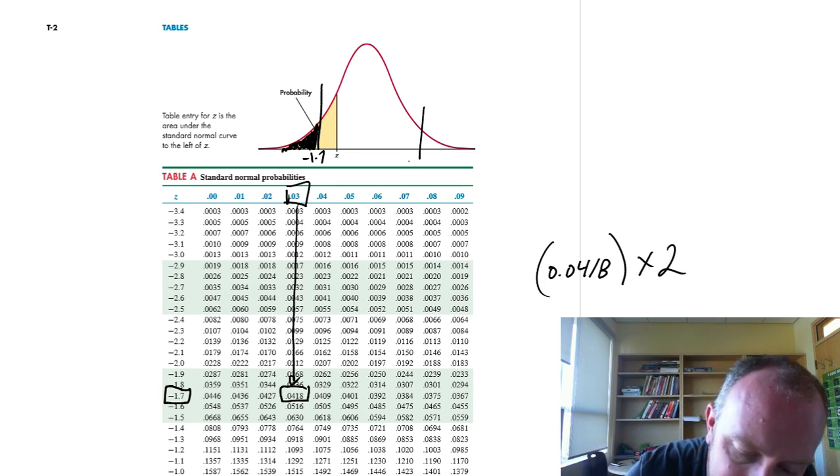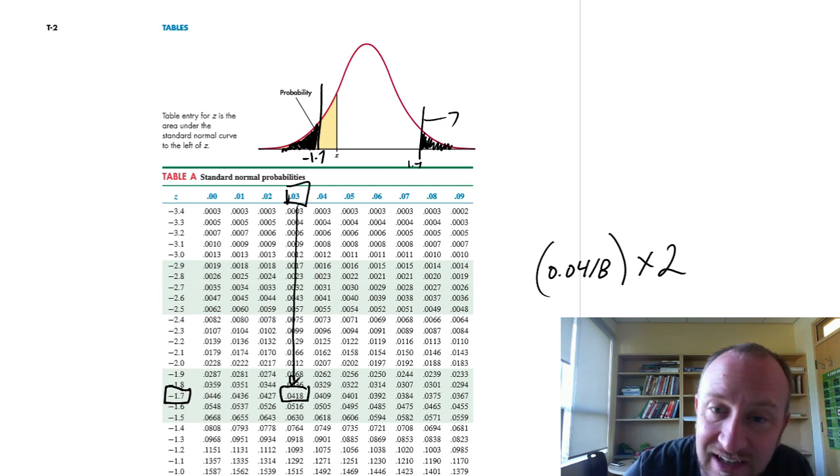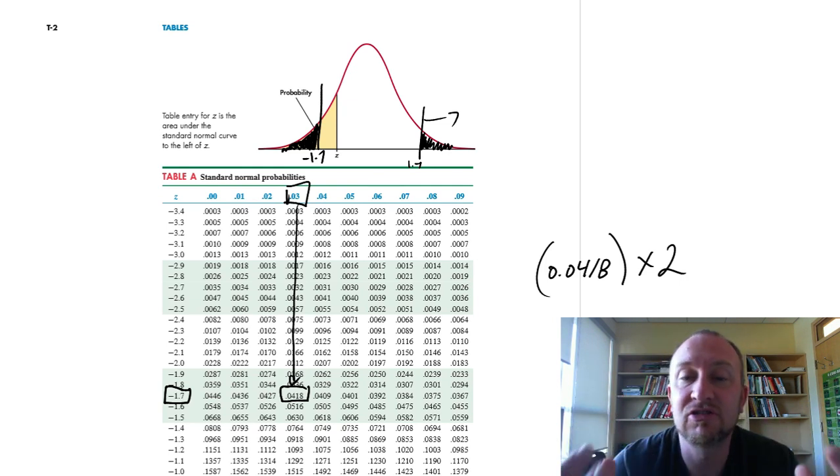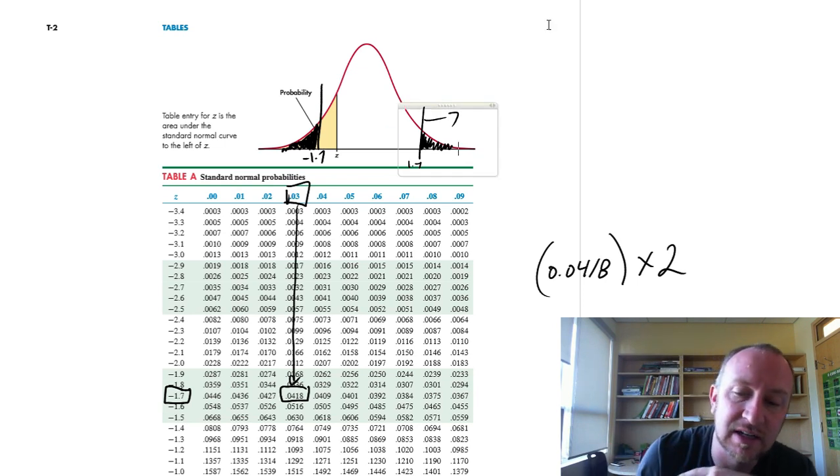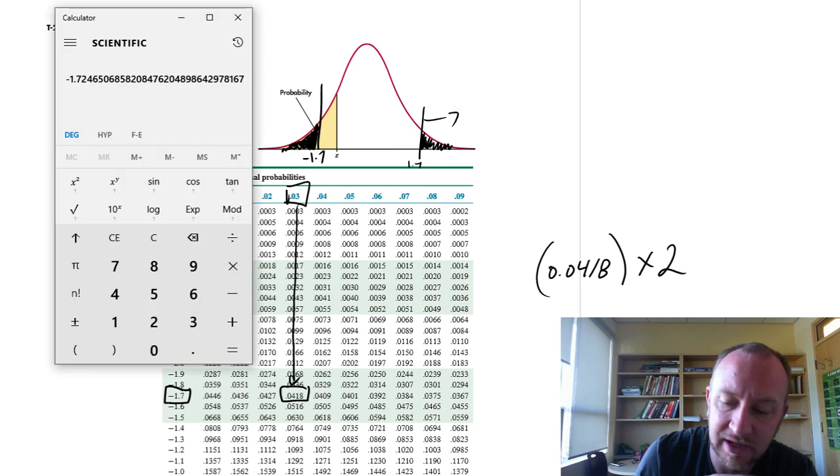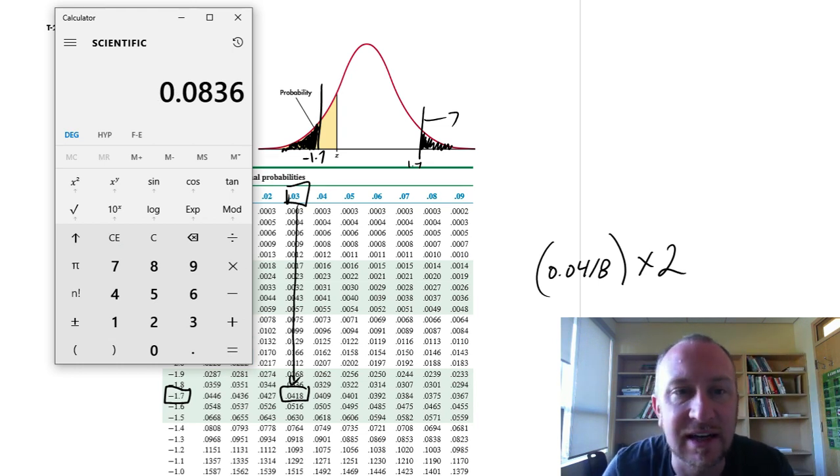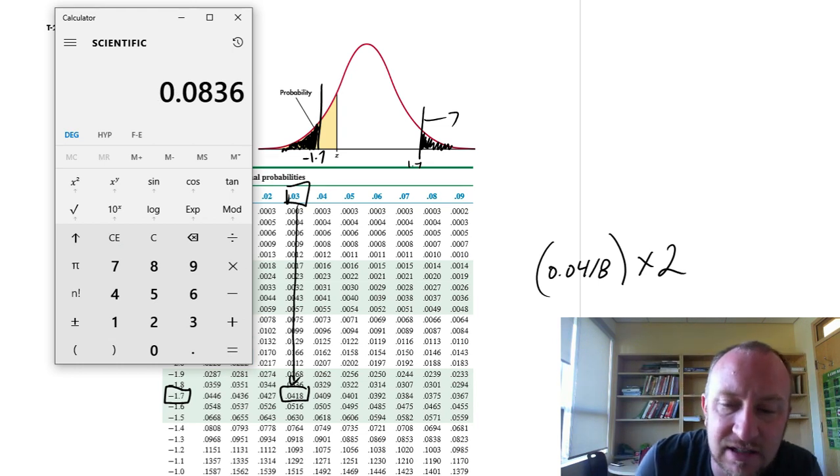But values up here, to the right of positive 1.7, those are also just as unlikely. And so we want to incorporate that probability as well. Remember, this is a measure of the strength of evidence against our null hypotheses. So our p-value here is going to be 2 times that probability. So 2 times 0.0418. So my p-value for this two-tail test is 0.0836.